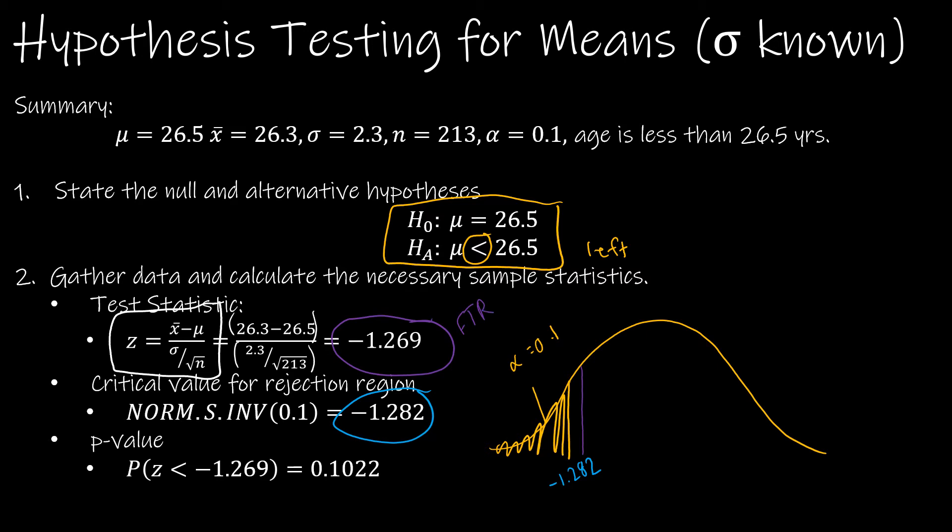Also, we can find our p-value. Our p-value is based on our z-score. And I didn't write the function that I'm using. But remember, this is just a norm S dist. And because it's left-tailed, I don't have to do one minus or anything like that. So it's just norm S dist of negative 1.269 comma 1 for true. And that's where I get that value.